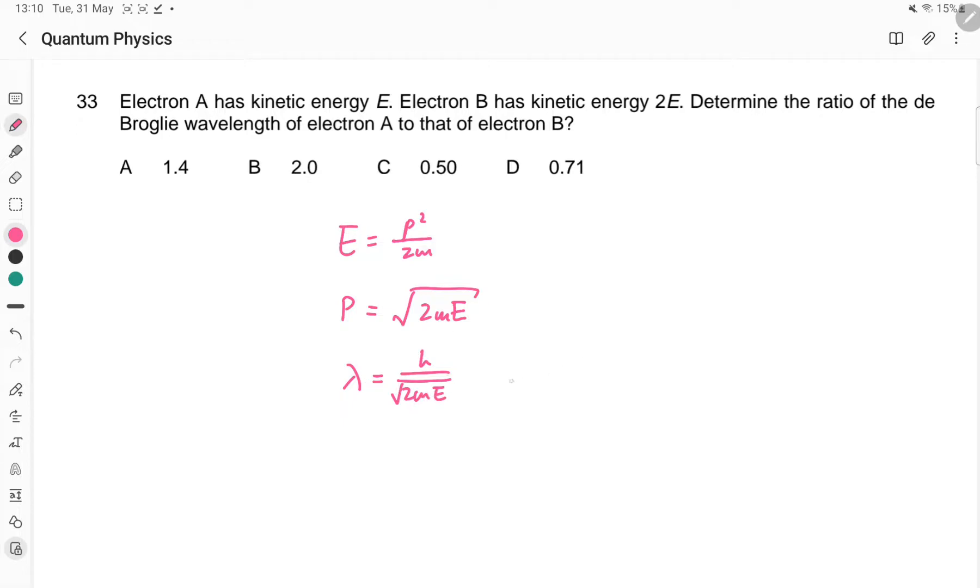This is an equation. We want to turn the equation into a proportionality relation because that is easier to work with. Such questions are always comparison questions. So lambda is proportional to 1 over square root E.